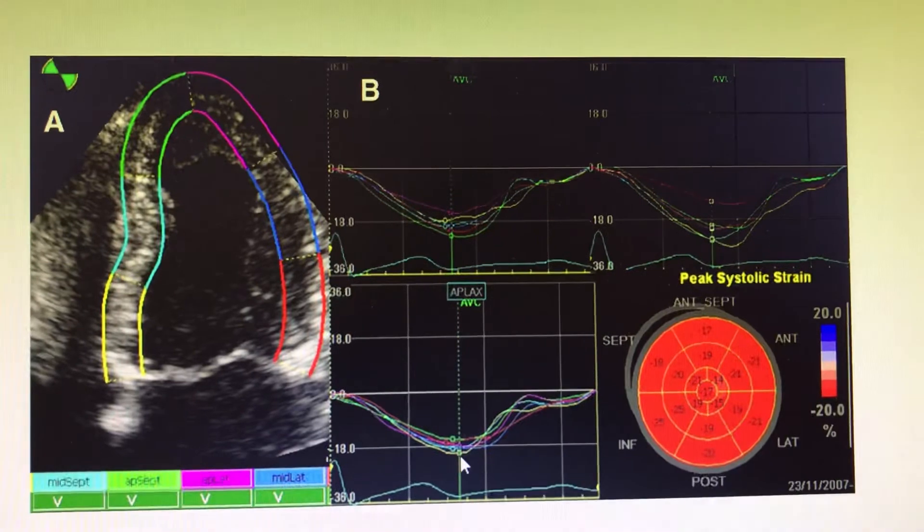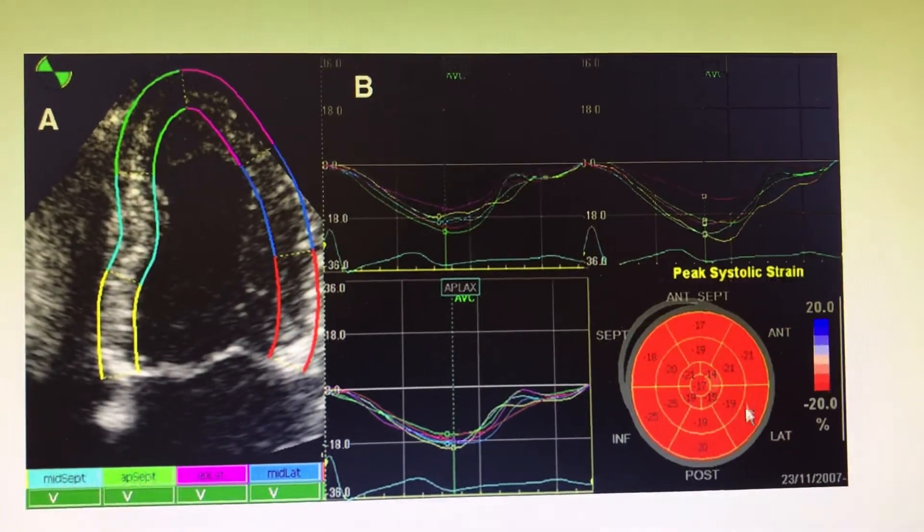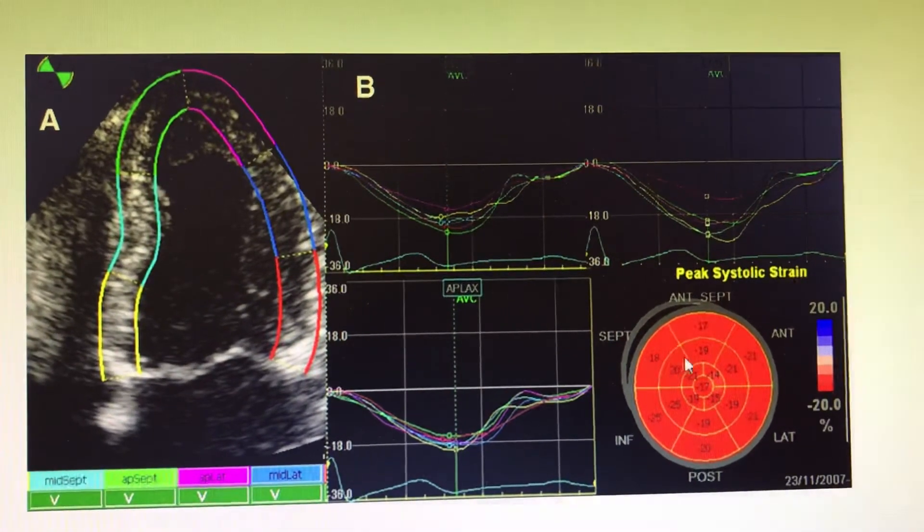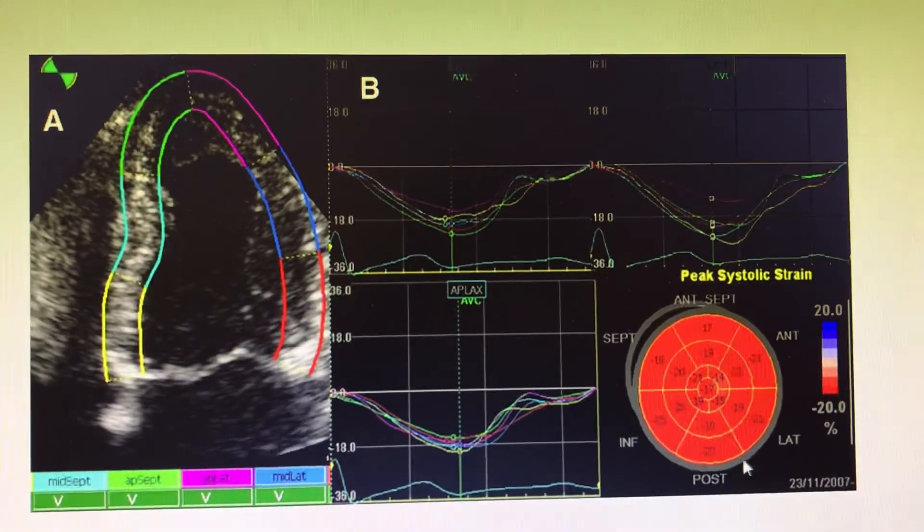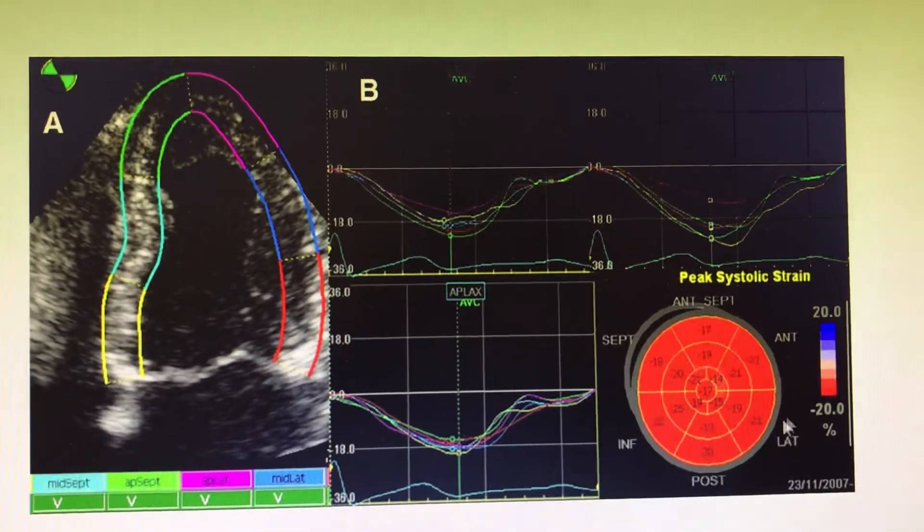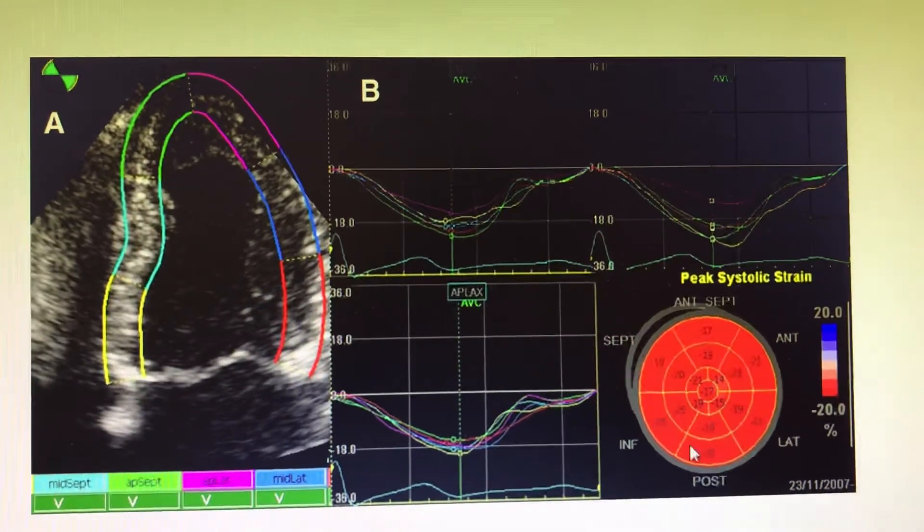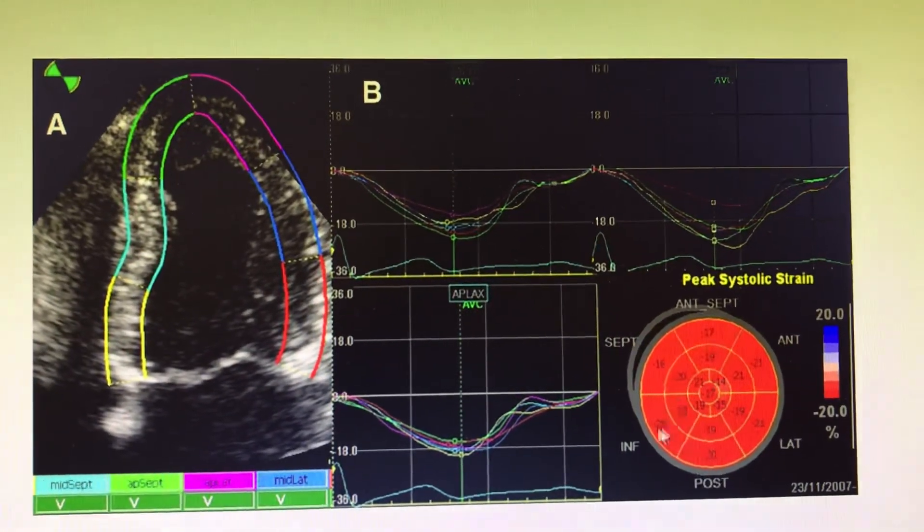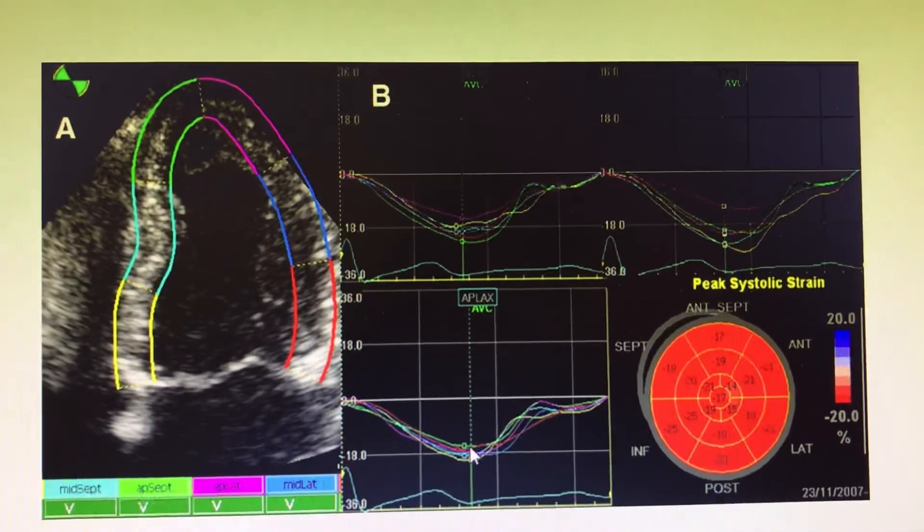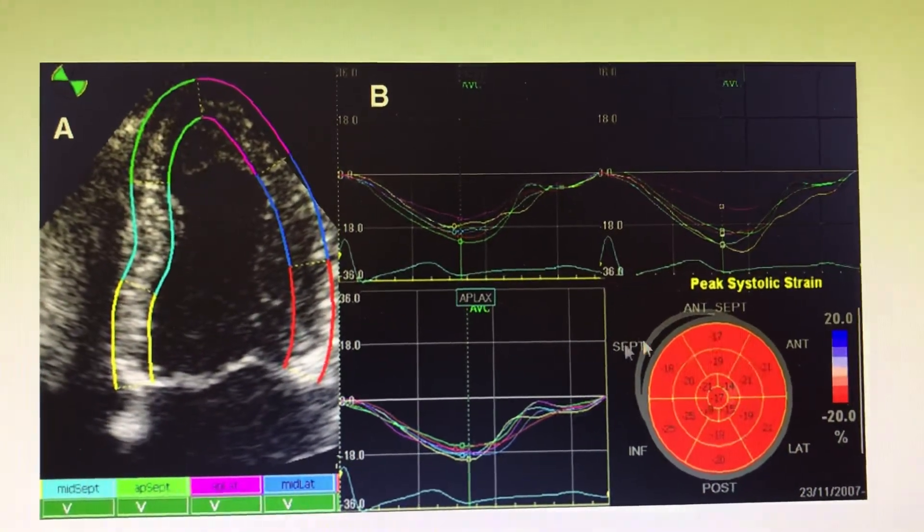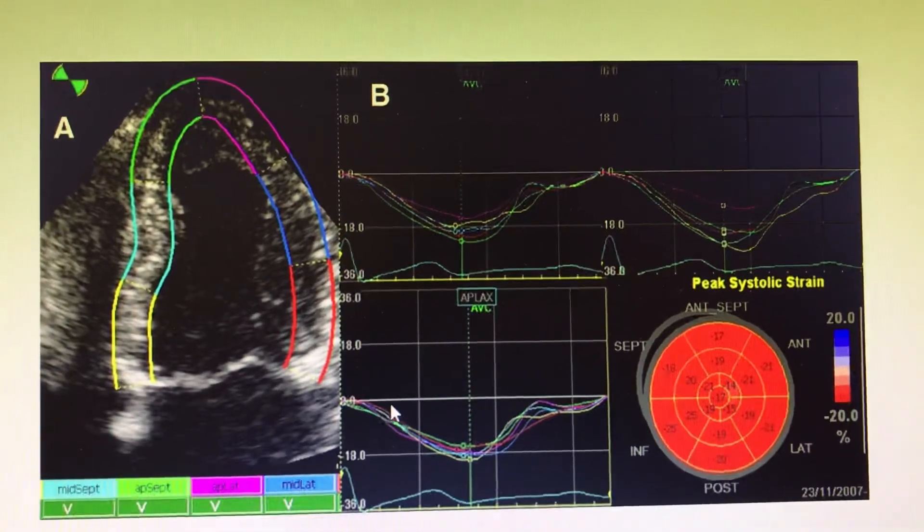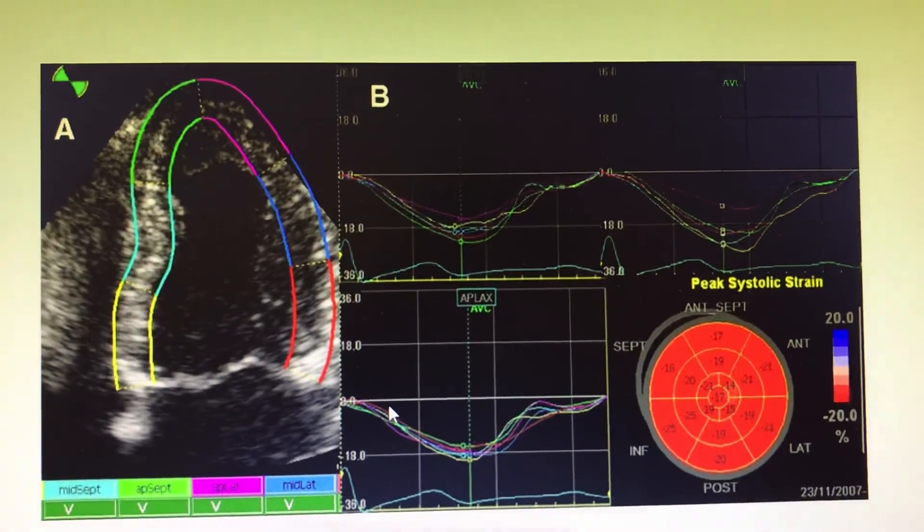The basal walls have the highest negativity. The anterior septal has less at around minus 17, and the apex even less. The lateral and inferior basal walls contract the most, showing values like minus 25 and minus 21. More negativity indicates more contraction. This is how contraction across the speckle is visualized in the software.